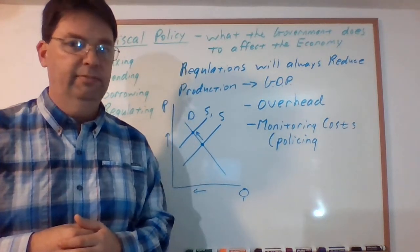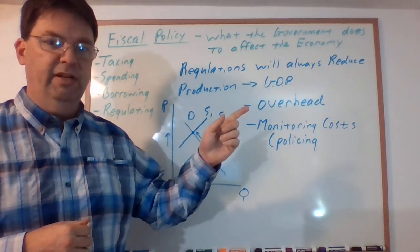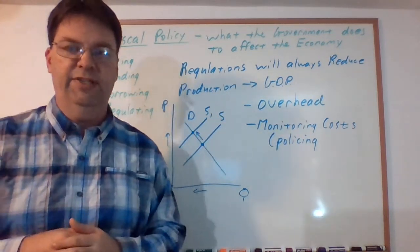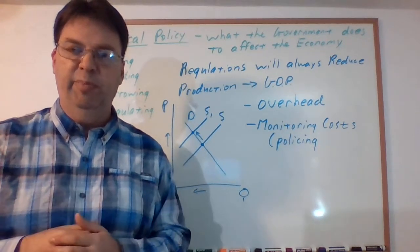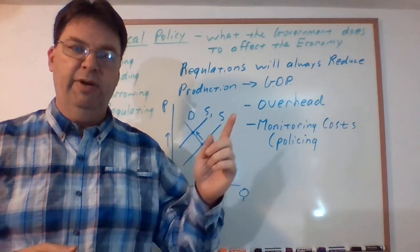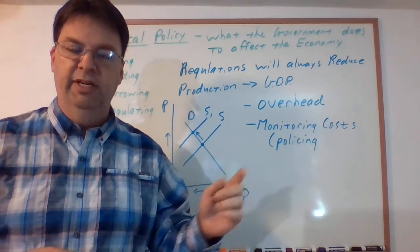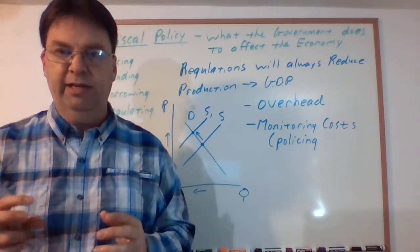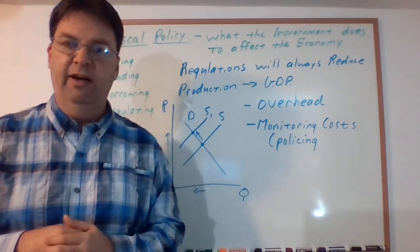The second problem is something called overhead. If you're going to say you can't do these things, obviously the people being regulated are going to say, yeah, who's going to make me? So then you have to set up a group of people that are going to be policing them. You have to send out inspectors, and so you now have this whole group of people that are not producing anything—they're simply inspecting people and keeping them from producing things.